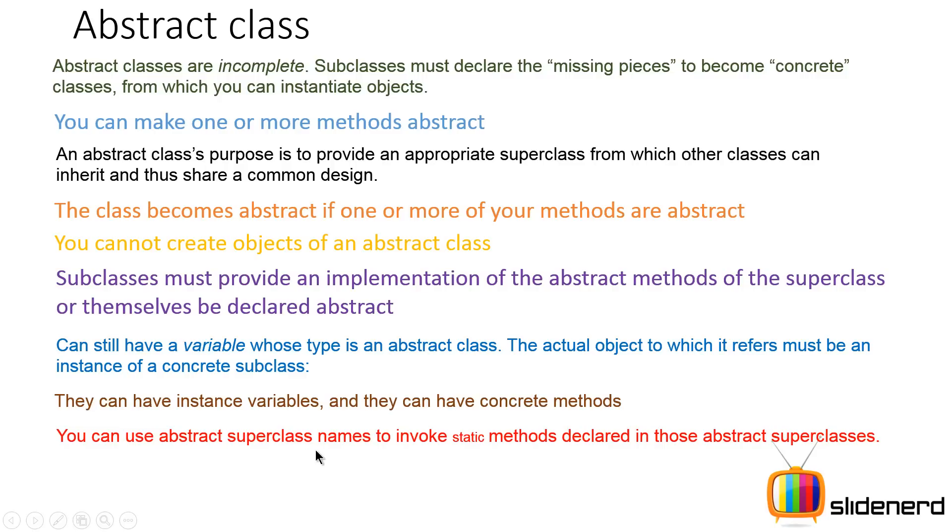You can use abstract superclass names to call static methods which are declared inside abstract superclasses. So if your abstract superclass is called Animal, you can have static methods being called like, say for example, Animal.getType kind of stuff.